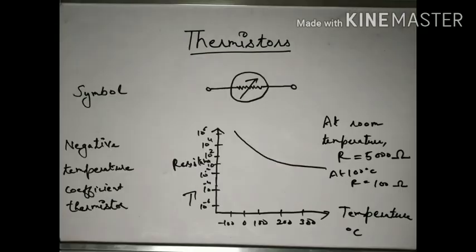Next is the symbol of the thermistor — it uses a variable resistance sign. We show the variable resistance symbol for thermistor because its resistance is actually varying along with temperature.